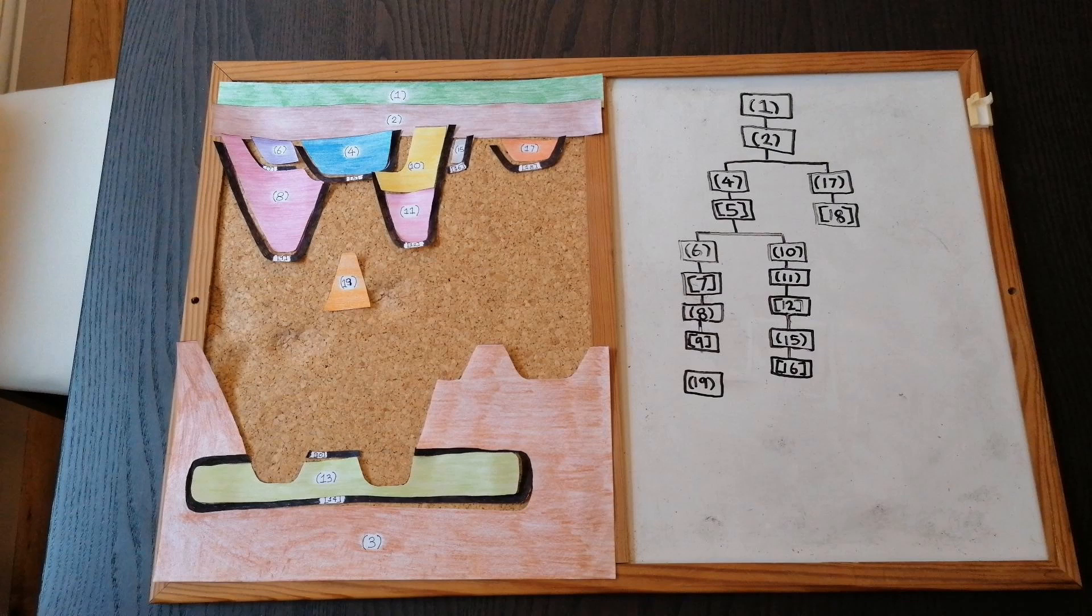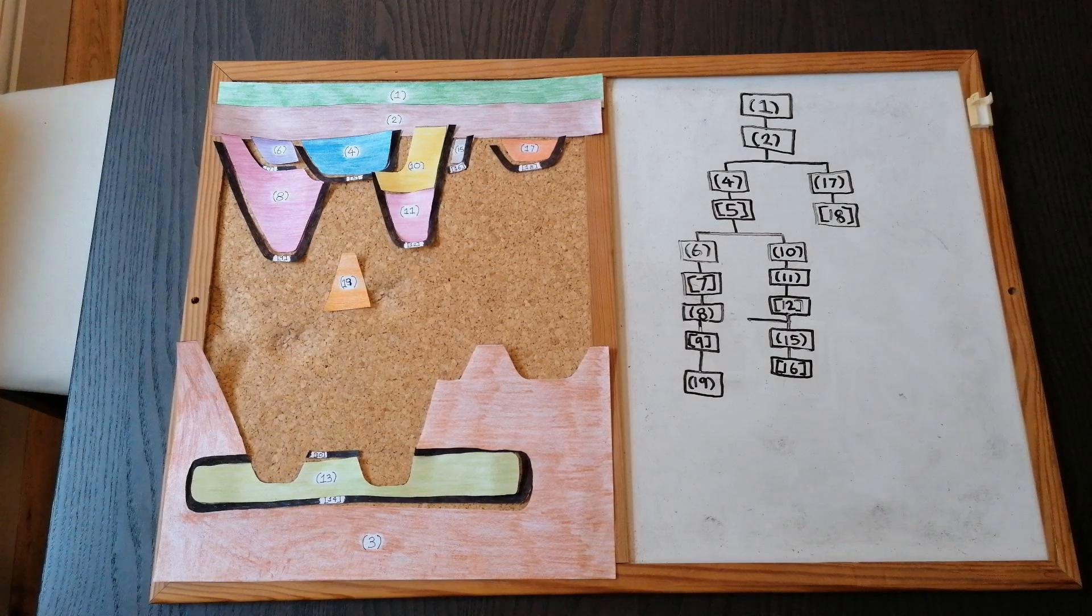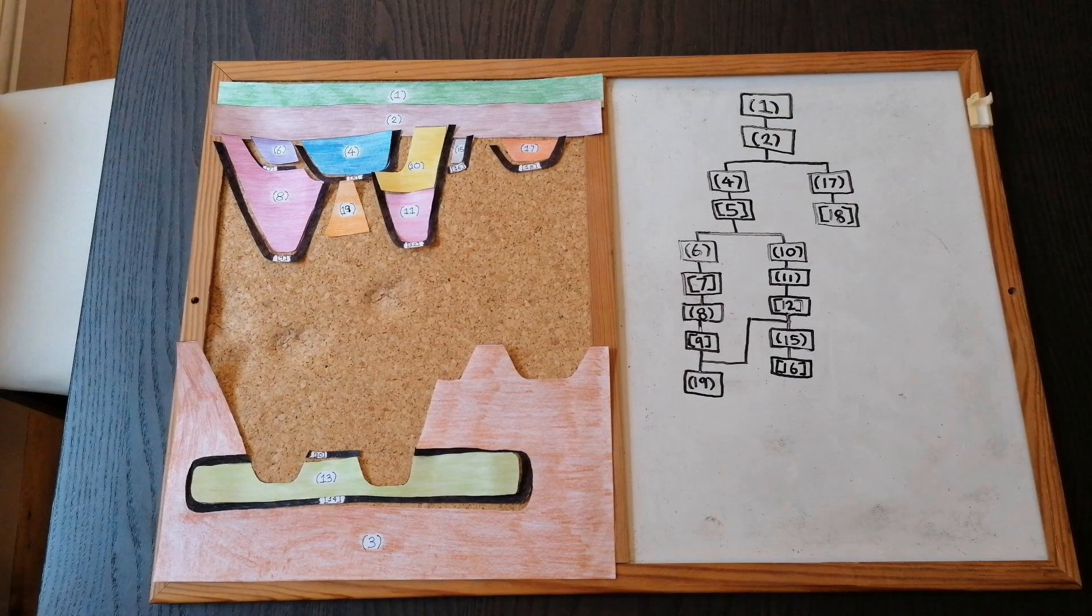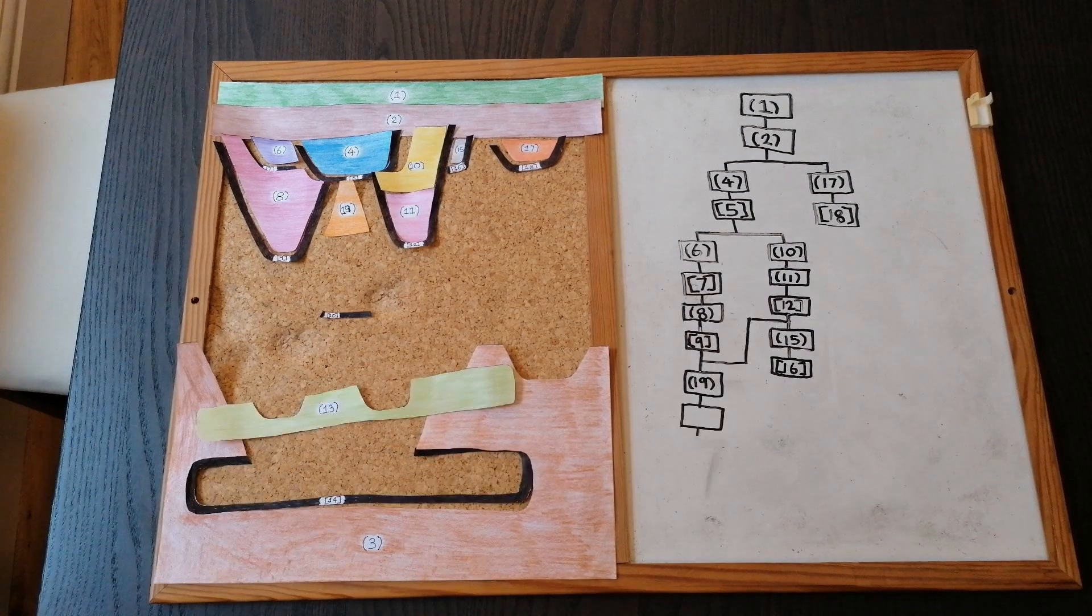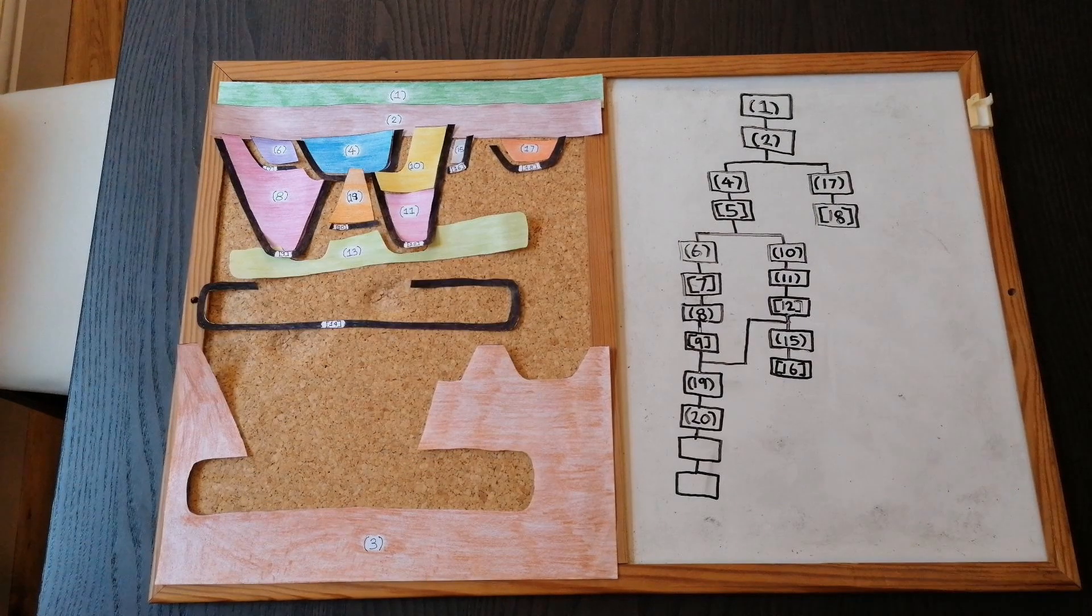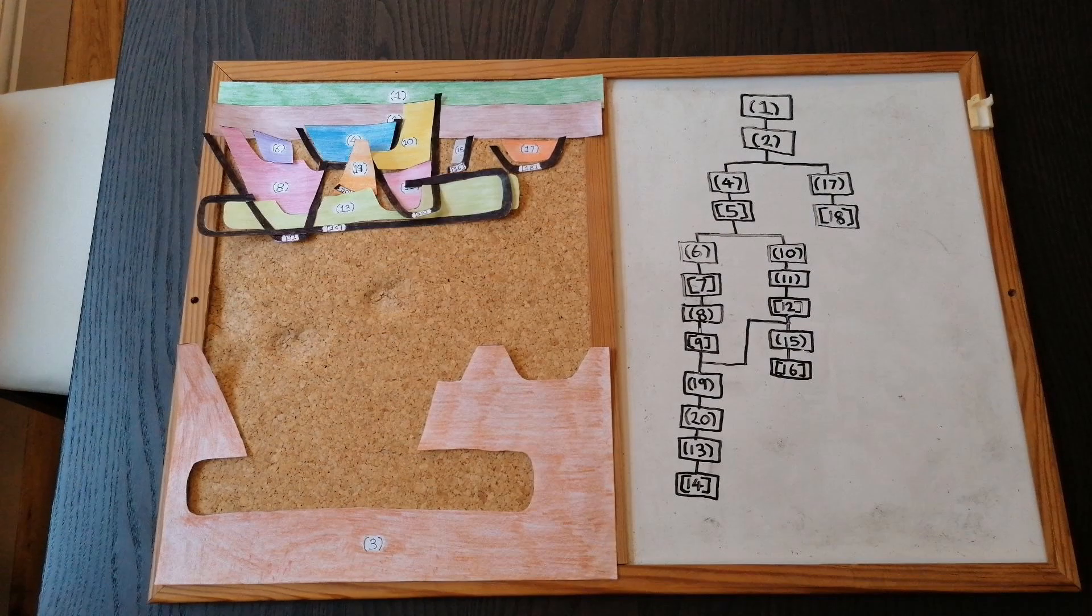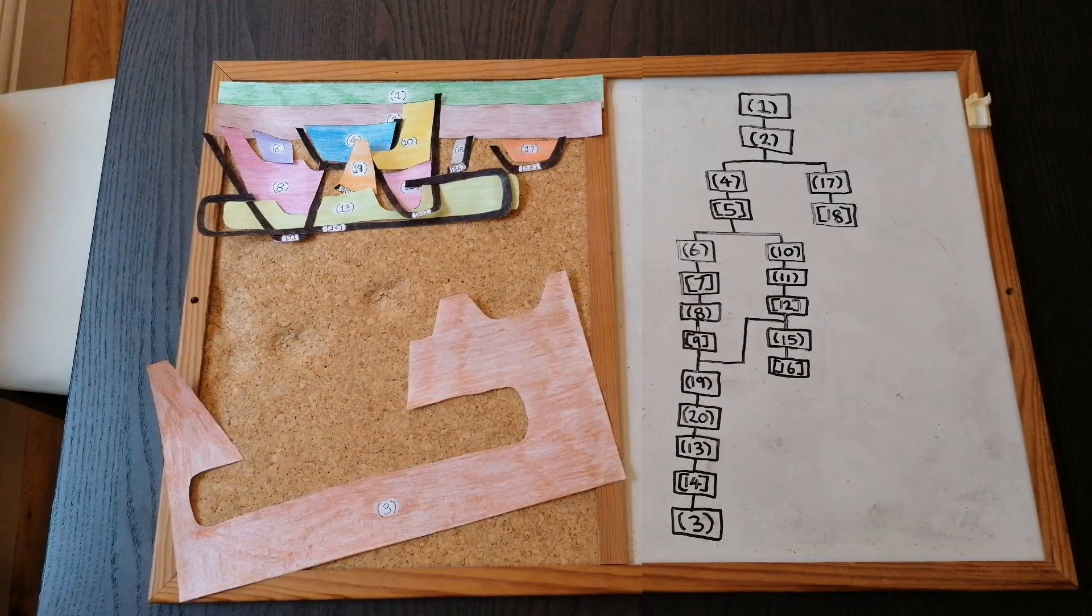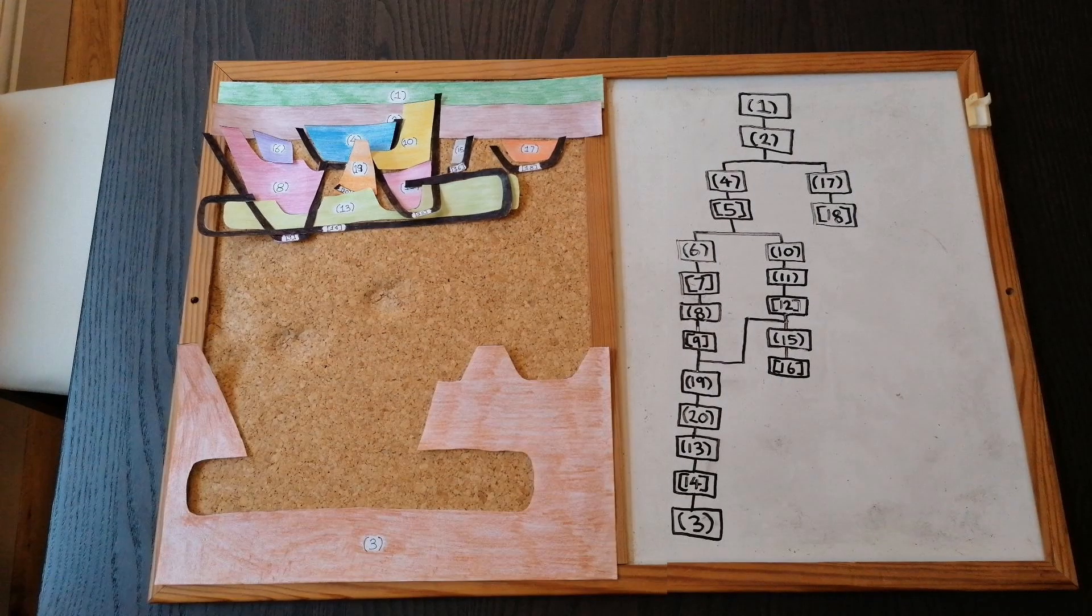As such, our lines merge because fill 19 is connected to both of these cuts. From this point, we can return to a simpler format with 20, 13 and 14. Finally, we are left with 3, the natural, which is always at the bottom of our matrix.